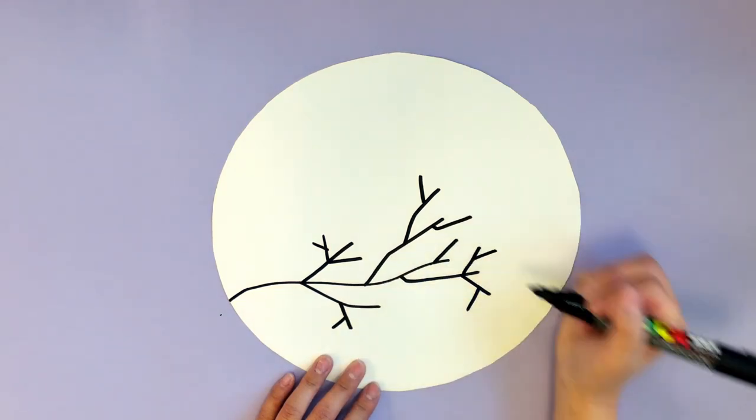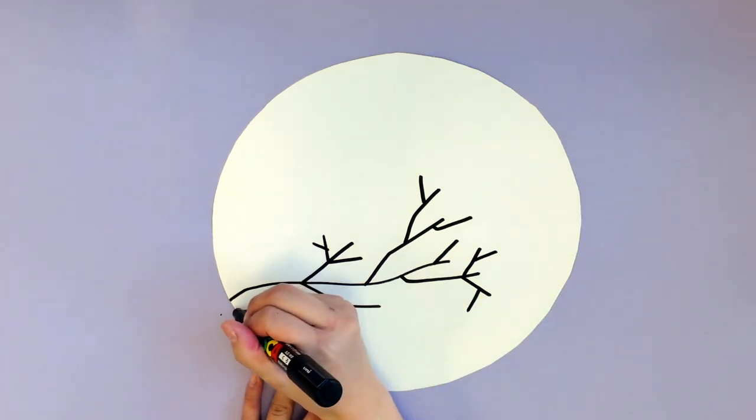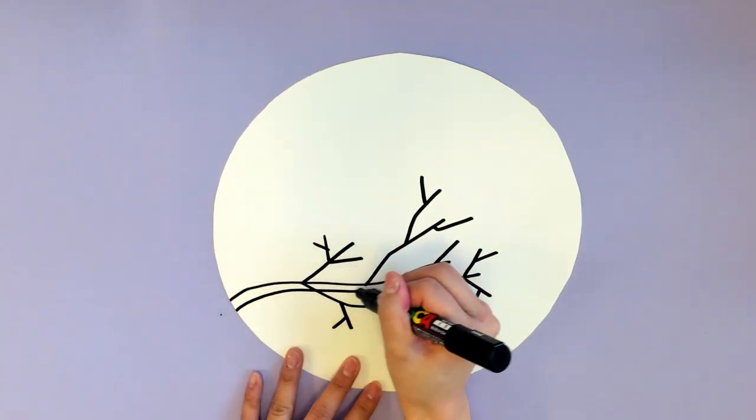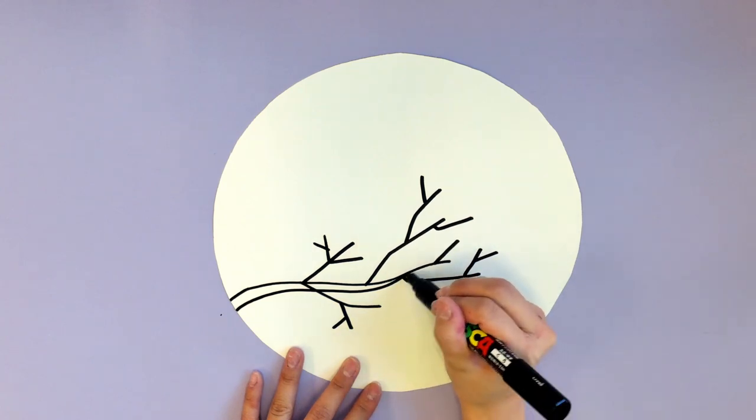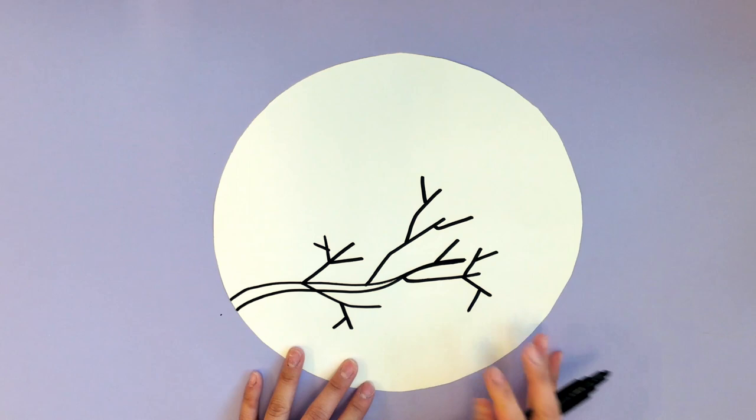When you're done with that, we're going to make our branches thicker towards the base. The branches are always thicker towards the trunk and taper out and become thinner towards the ends. I'm going to go ahead and fill that in.